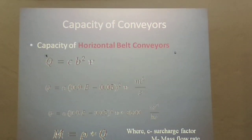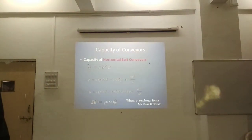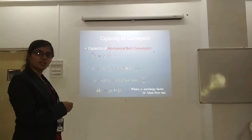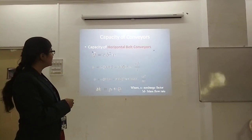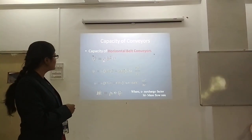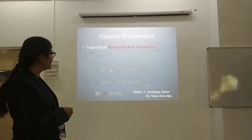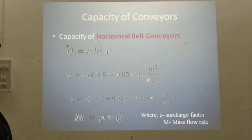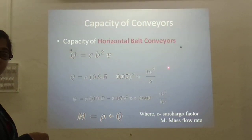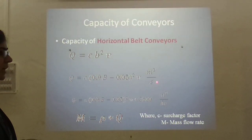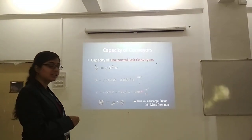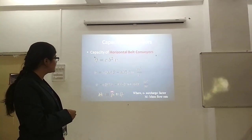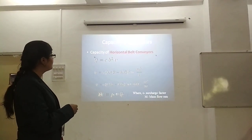Now we will see the capacity of the conveyor. There are two types: horizontal and inclined belt conveyor systems. Q indicates the capacity in cubic meters per second. C is the surcharge factor. The formula is 0.9 × C × V. If we want the capacity in cubic meters per hour, we multiply by 3600. This gives the volumetric capacity of the conveyor system. If we want the mass flow rate, we multiply the volumetric capacity by density. This is for the horizontal belt conveyor system.